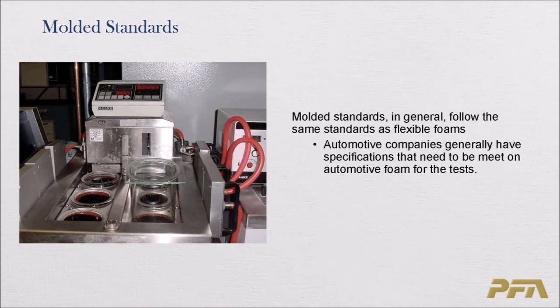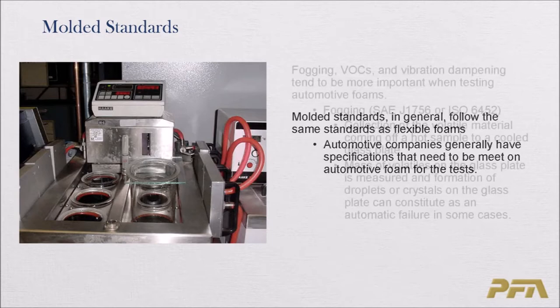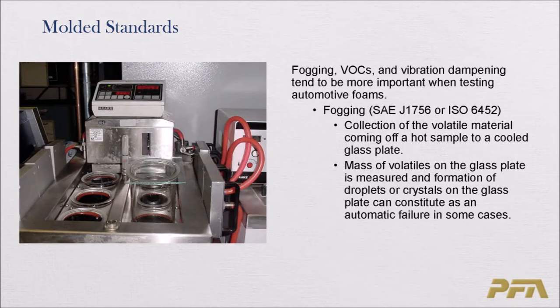Most molded foam standards also require testing to D3574 but additionally require other testing, especially for automotive. Fogging and VOCs are absolutely critical for automotive applications. For automotive seating there is also vibration dampening testing. Fogging is the collection of volatile material coming off a hot sample onto a cooled glass plate; the mass of the volatiles on the glass plate is measured, and formation of droplets or crystals on the glass plate can constitute an automatic failure.